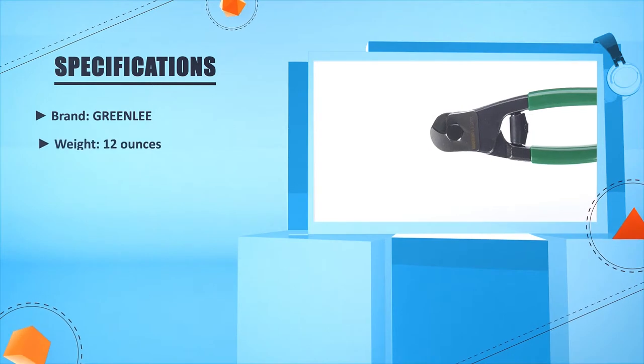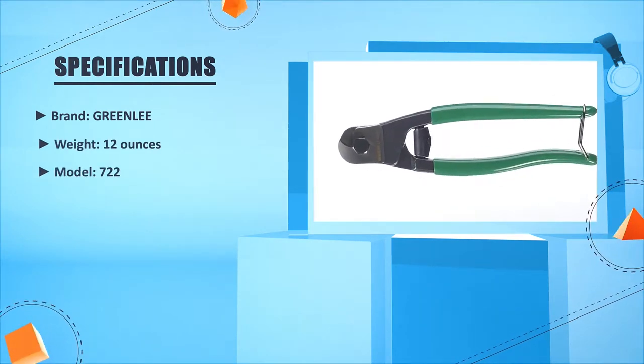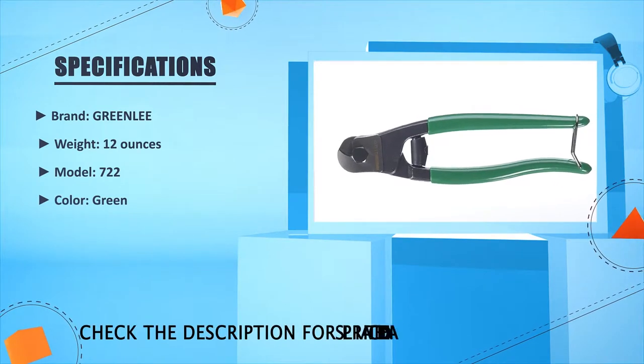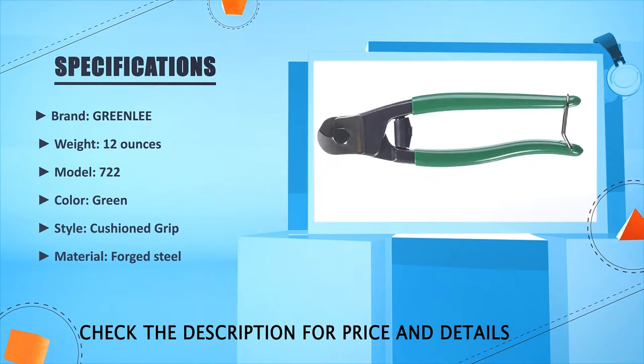Brand: Greenlee. Weight: 12 oz. Model: 722. Color: Green. Style: Cushioned Grip. Material: Forged steel.